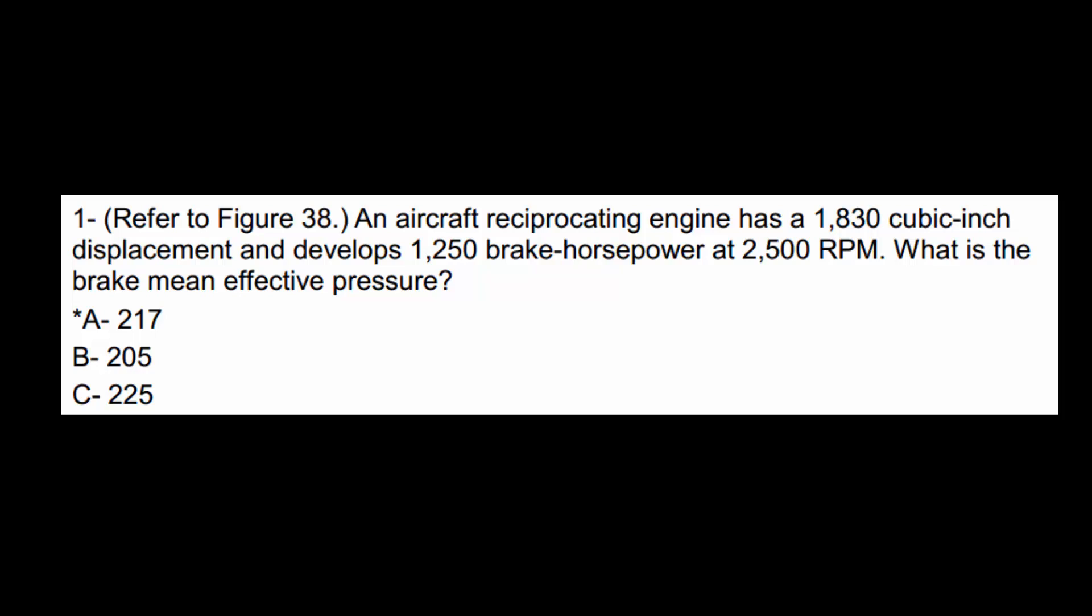An aircraft reciprocating engine has a 1830 cubic inch displacement. It develops 1250 brake horsepower at 2500 RPM. So the question is, what is the brake mean effective pressure?